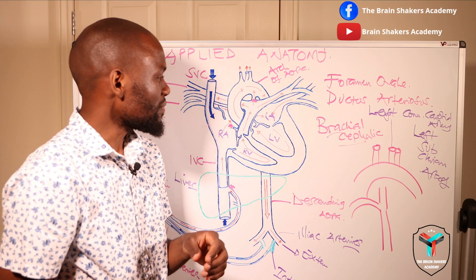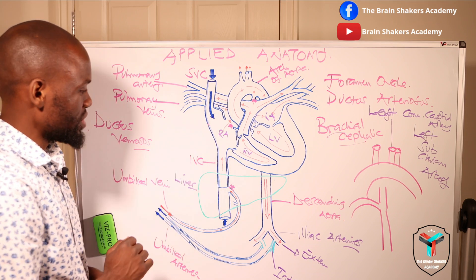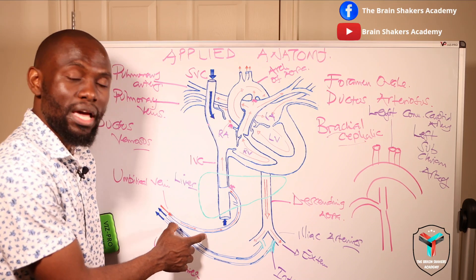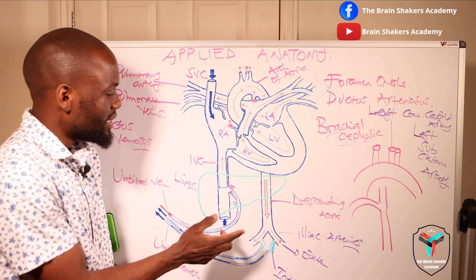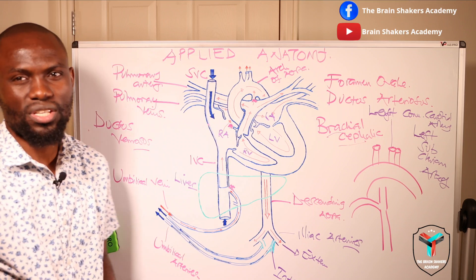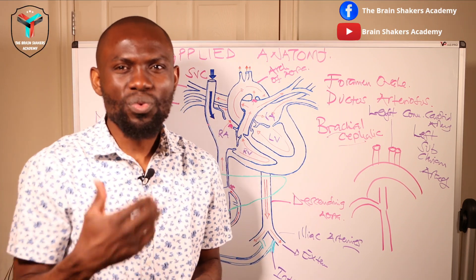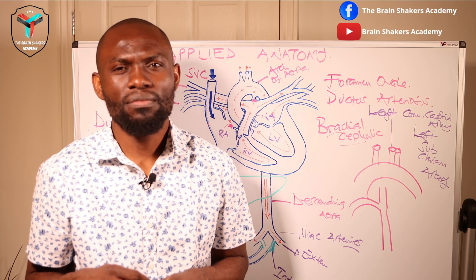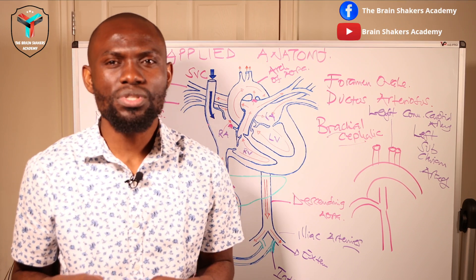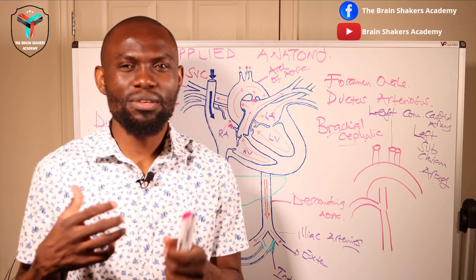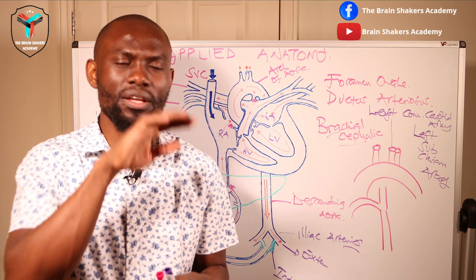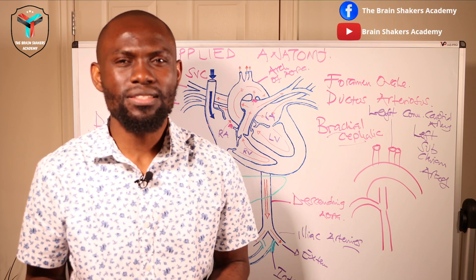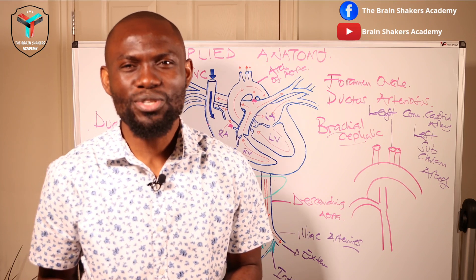Those are the structures involved in fetal circulation. Of importance are the temporal structures created during fetal life: the umbilical vein and umbilical arteries; the ductus venosus, which connects one vein into another; the foramen ovale, which allows connection between the right atrium and left atrium; and the ductus arteriosus, which connects the pulmonary artery to the aorta. Blood then flows into the descending aorta and returns to the placenta through the umbilical arteries.